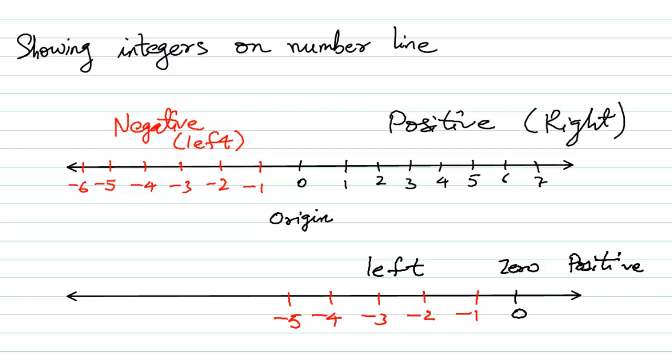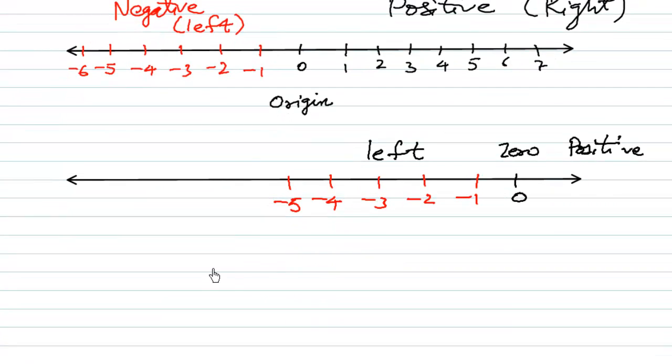Secondly, consider the number 3. Now 3 is 3 steps away from the origin, from the number 0.